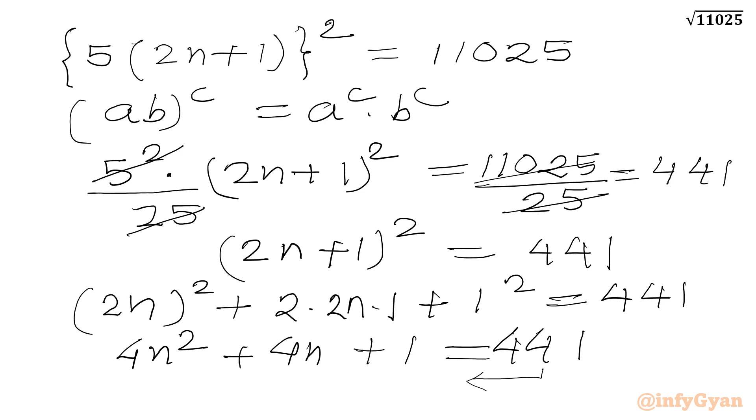Let us take all the terms to LHS. So I can write 4n square plus 4n minus 440 equal to 0.